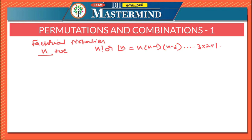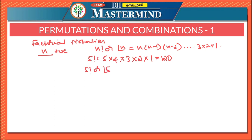Now let us calculate the value of 5 factorial. According to this formula, 5! equals 5 × 4 × 3 × 2 × 1. Therefore 5 × 4 × 3 × 2 × 1 equals 120. So the value of 5! is 120.